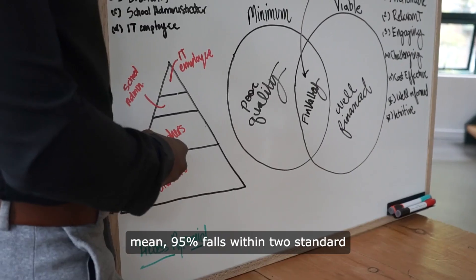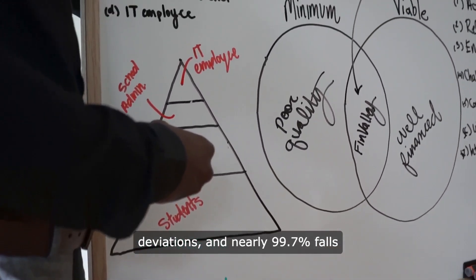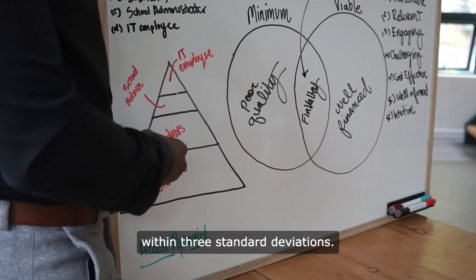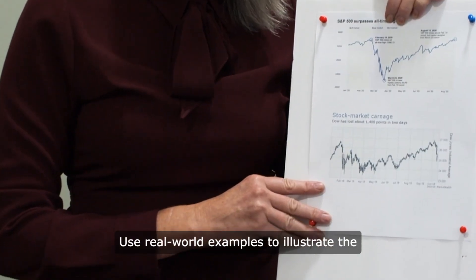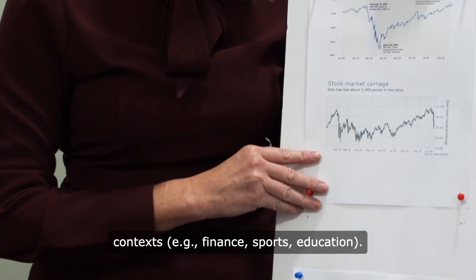95% falls within two standard deviations, and nearly 99.7% falls within three standard deviations. We'll use real-world examples to illustrate the significance of standard deviation in different contexts.